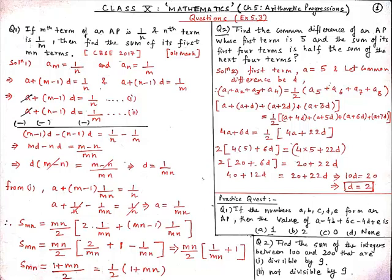The sum of the first mn terms — as we know the sum of n terms of an AP is S_n = n/2 × [2a + (n-1)d] — using this here, we get S_mn = mn/2 × [2 × (1/mn) + (mn-1) × (1/mn)]. This gives mn/2 × [2/mn + 1 - 1/mn].